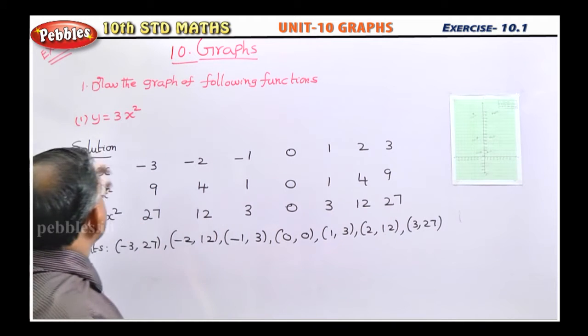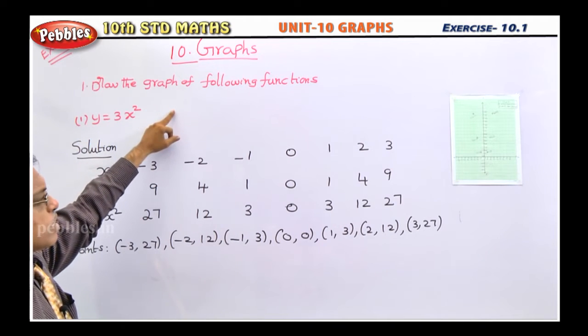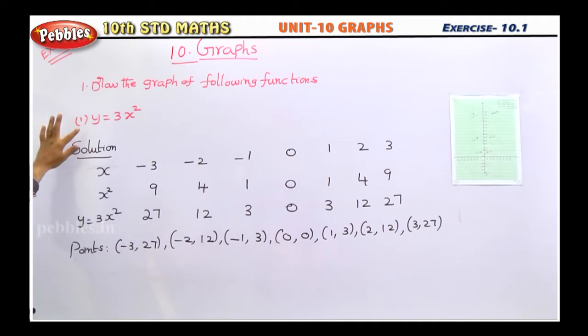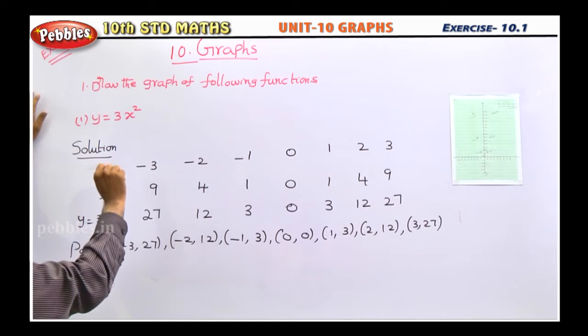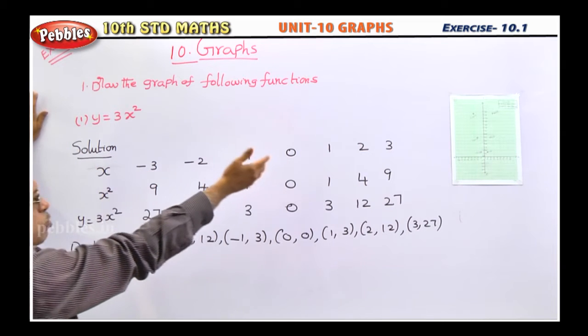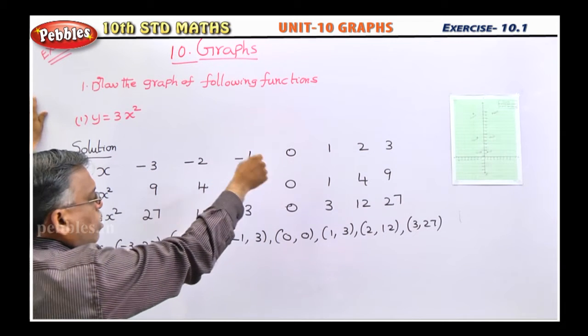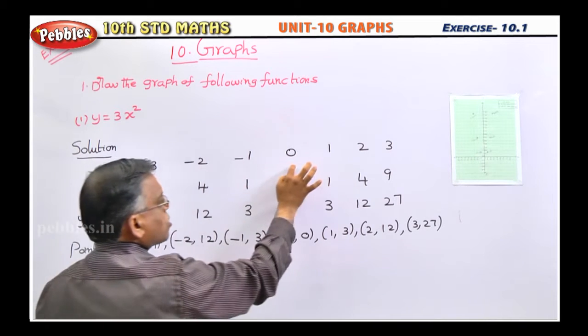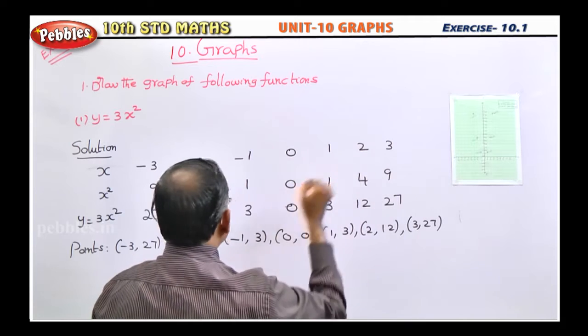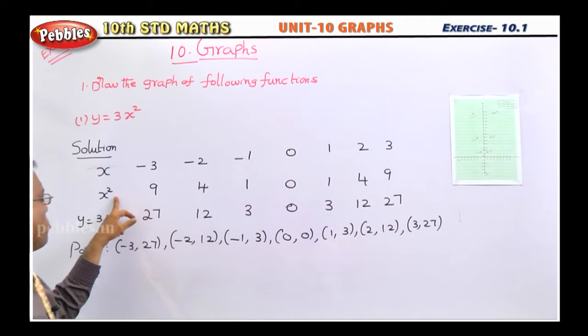This is the first model. Listen, draw the graph of the following function. This is very easy. First one, y is equal to 3x square. That means for x value you take some values for x, like some negative values, some positive values including 0. That's why I took minus 3, minus 2, minus 1, 0, 1, 2, 3. Then you square the values of x.